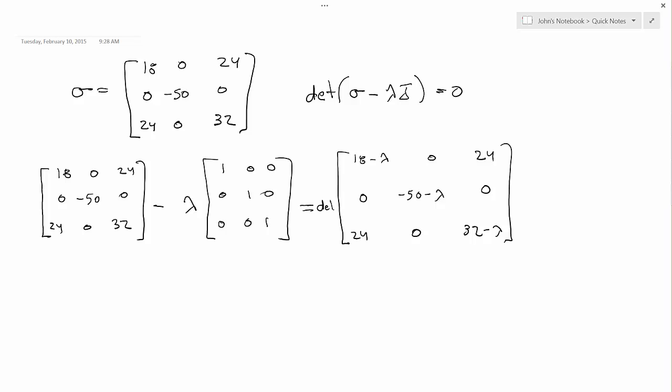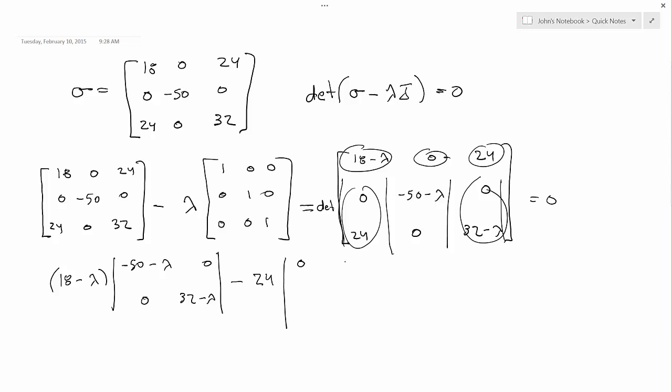Then we want to take the determinant of this thing, set it equal to zero. Remember how I told you to take the determinant by taking this term and multiplying by the determinant of that guy. And then we would do this times the determinant of that, but it's zero, so we'll skip that. Then we have the last one, it's this times the determinant of this. So 24 times the determinant, and that's equal to zero.